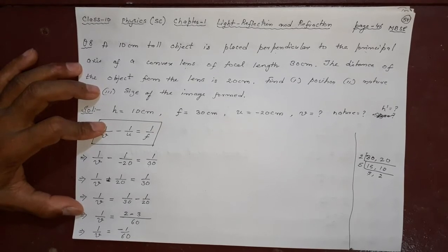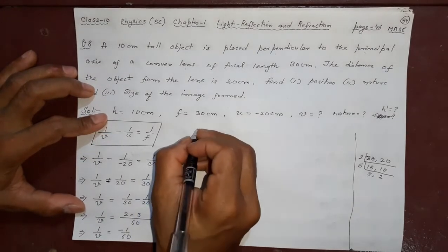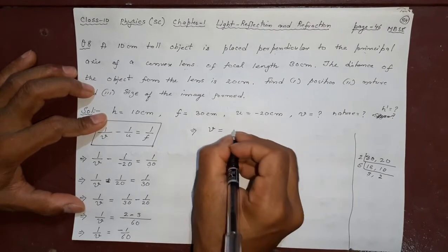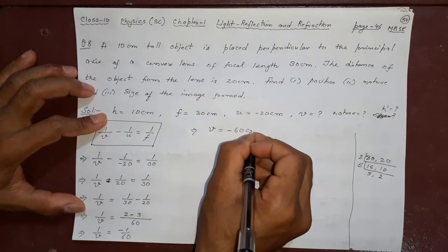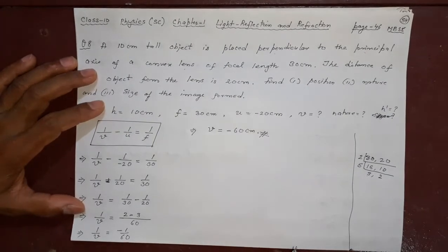So what I got here is, I am getting the answer in minus. I will continue here: v is equal to minus 60 cm. This is my position of the image.